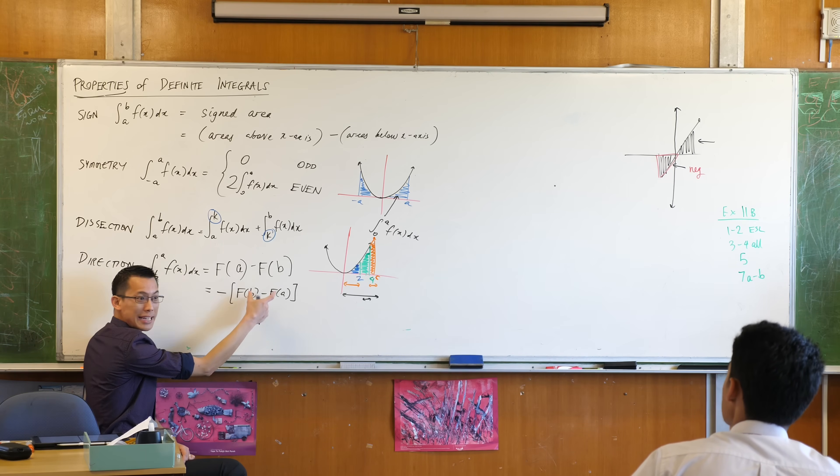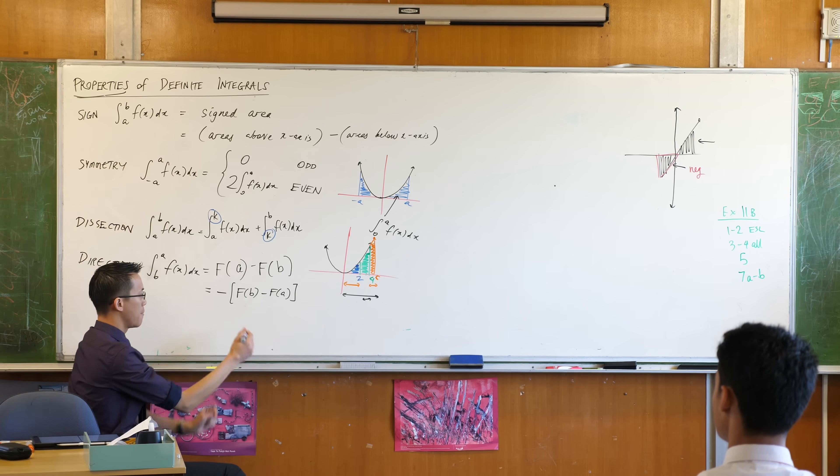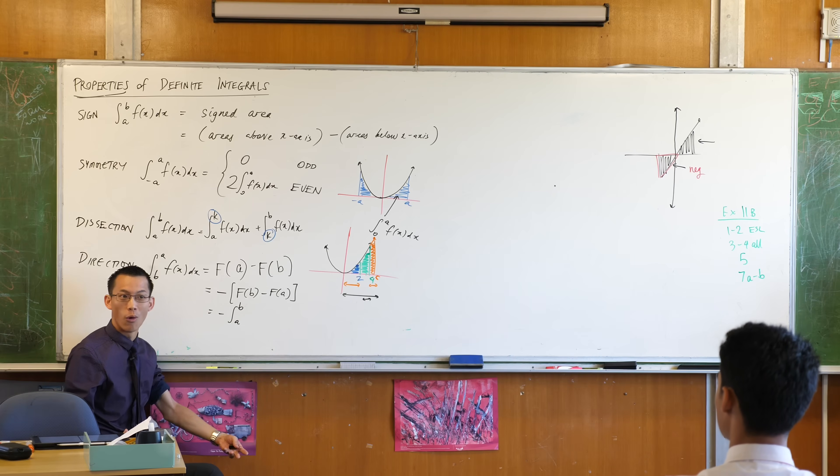But I know what this thing is. By definition, this is my normal integral. By definition, this is from A to B in my normal order. Does that make sense?